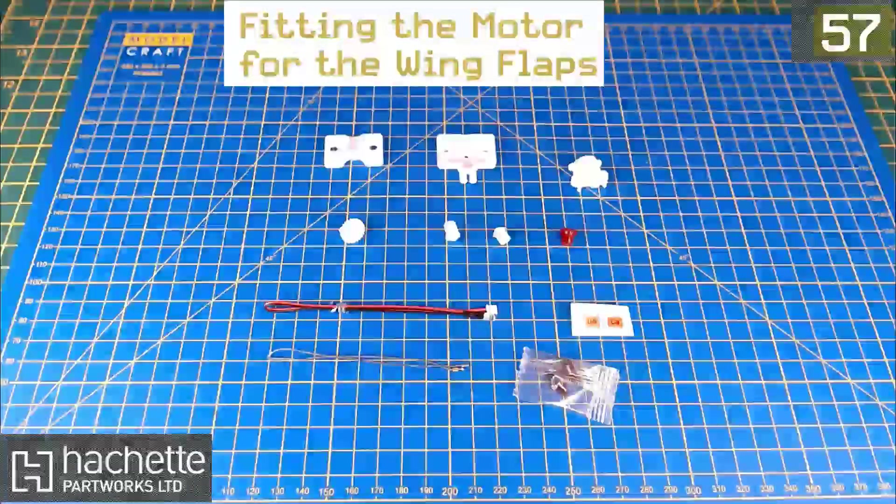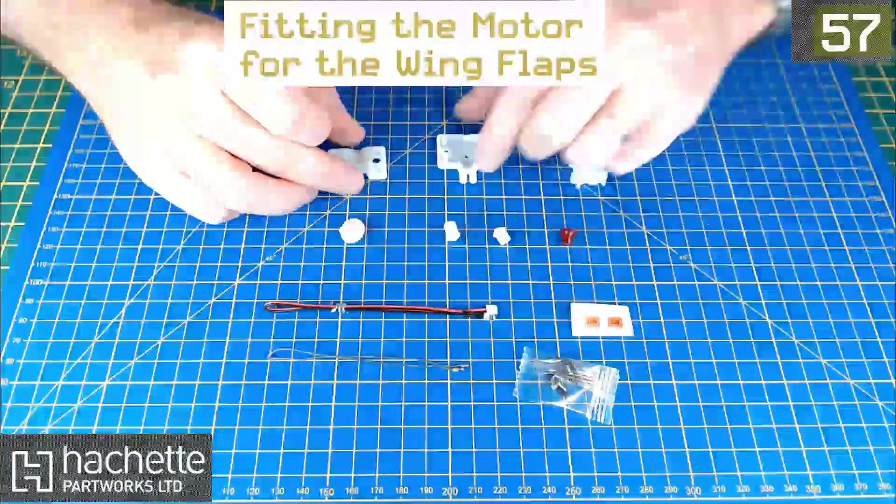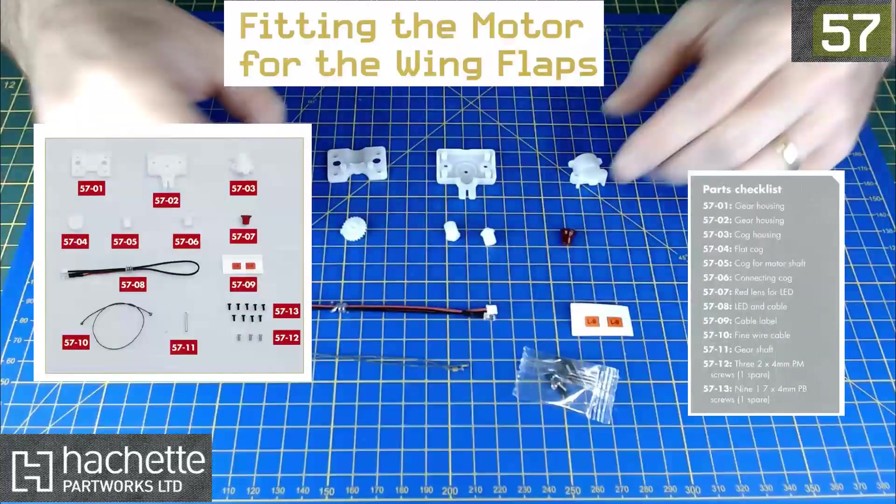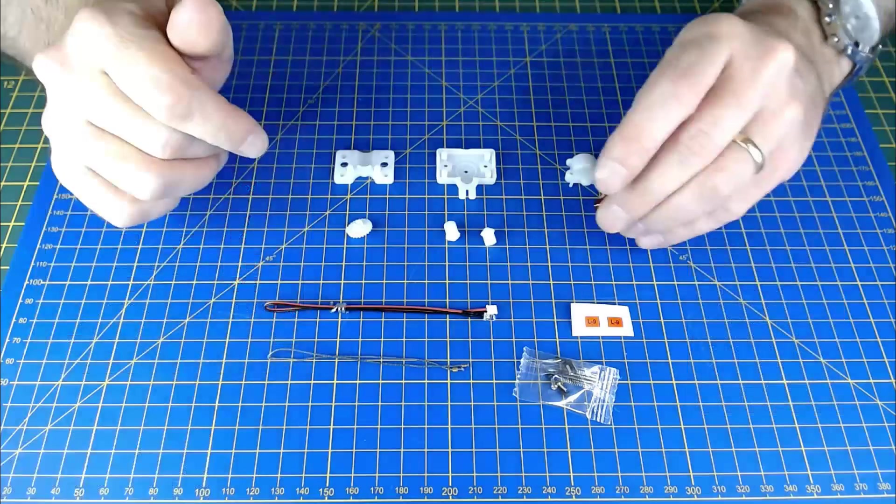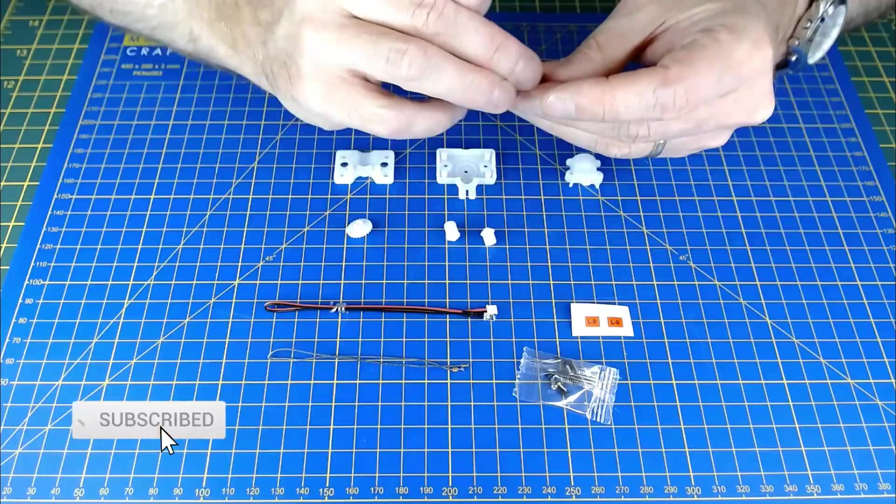Okay, so parts laid out here for issue 57. Quite a few. Just looks like it's going to be a gearbox or something for the motor for the wing flaps. Also got an LED lens or light lens.